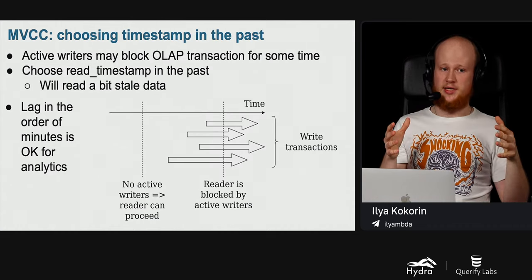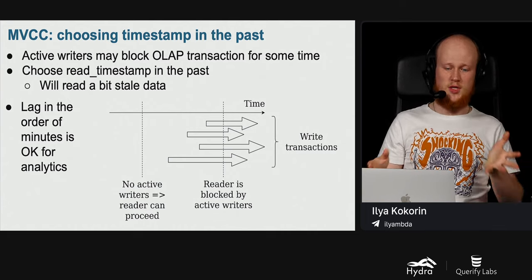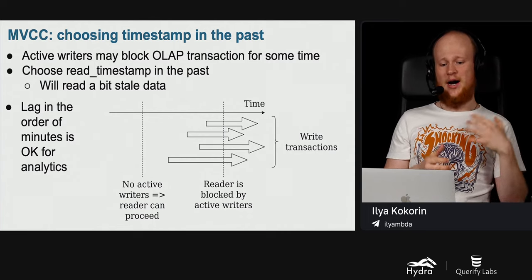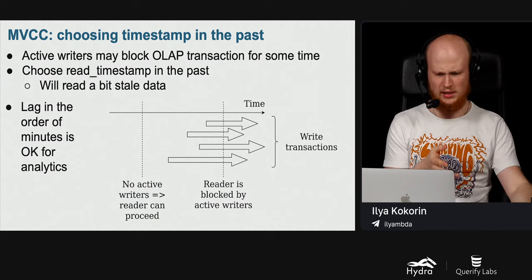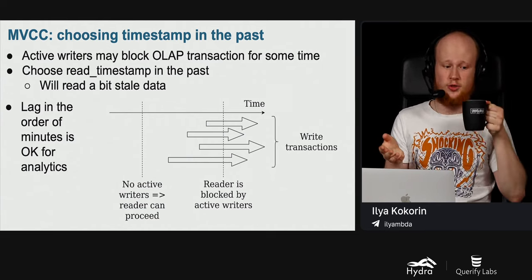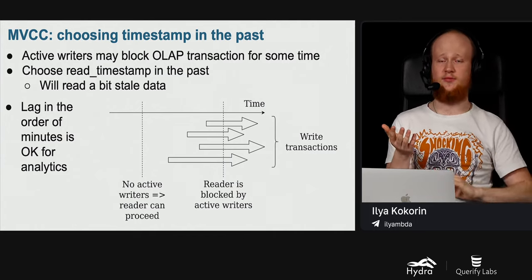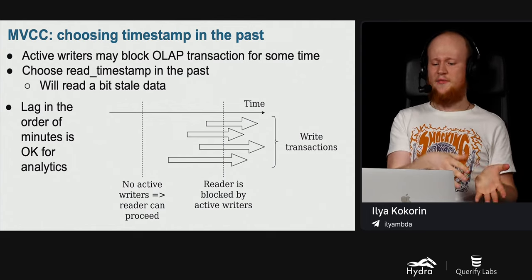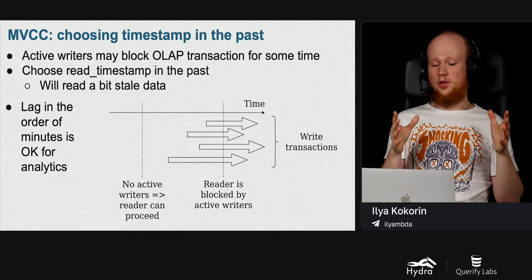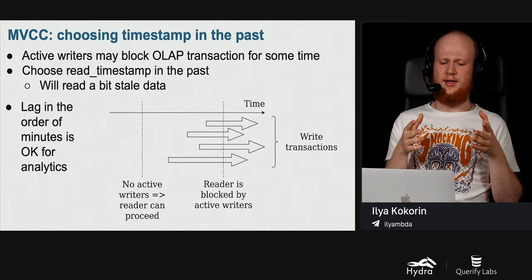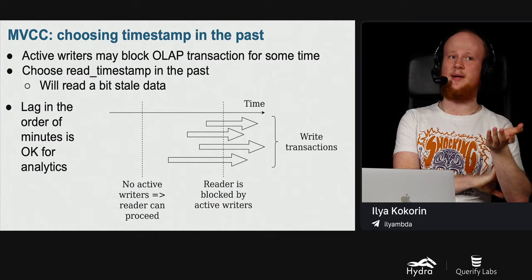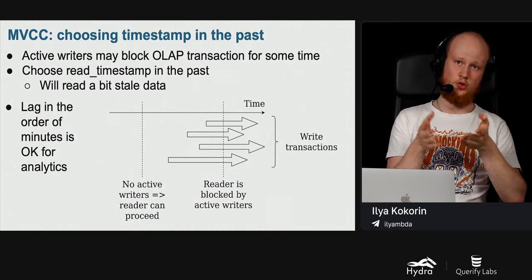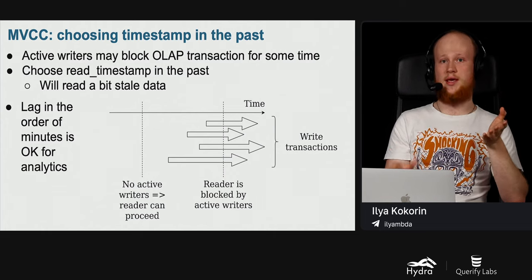To avoid being blocked, we can choose our read timestamp in the past — like 10 minutes ago or 5 minutes ago. The probability that a writer active 10 seconds ago is still active is very small, so very few writers can block us. Of course, choosing a read timestamp in the past means we read slightly stale data — data that was current 10 seconds ago — but for most analytic cases, a lag on the order of minutes is acceptable.